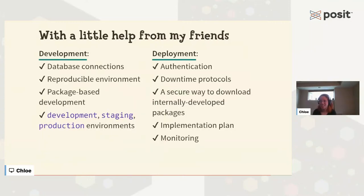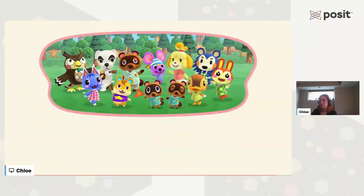This brings us towards the end of the talk. To summarize: we looked at the different tools for development and deployment of an early warning system in the hospital. On the development side: database connections, reproducible environment facilitated through renv, package-based development, and development/staging/production environments. On the deployment side: authentication and scheduling facilitated by Posit Connect, downtime protocols, a secure way to download internally developed packages with Posit Package Manager, an implementation plan working with collaborators and end users, and monitoring. All of this would not have been possible without collaboration. Developing and deploying ChartWatch in the hospital required working with a great team and many different people within the hospital.